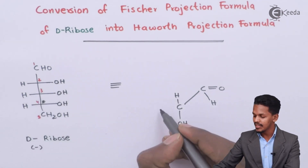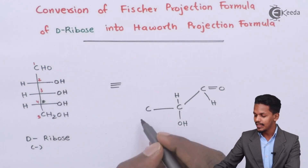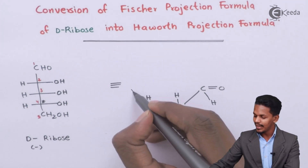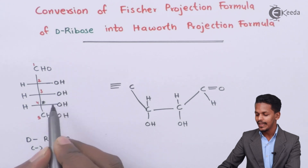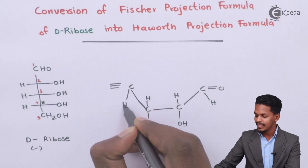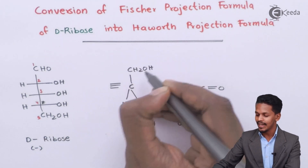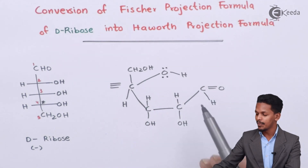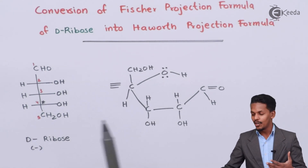Moving to the third carbon atom, the OH group is attached on the right hand side according to the Fischer projection formula, so in the Haworth projection formula it will be presented on the lower side, with hydrogen on the opposite side. The fourth carbon atom also has OH, and the fifth carbon atom is CH2OH. The hydrogen on C4 is towards the downward direction, while CH2OH is on the side and OH is also present. Based on this structure, it is straightforward to convert the Fischer projection formula into the Haworth projection formula.